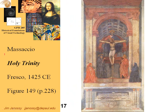Now we come to Masaccio, an artist who worked in the Church of Santa Maria Novella in Florence. What you're looking at here is actually a flat wall with a fresco — it has no depth whatsoever. But it amazed people when they saw it because they had the distinct impression that this was a big hole cut out of the wall, like a vault going backwards.